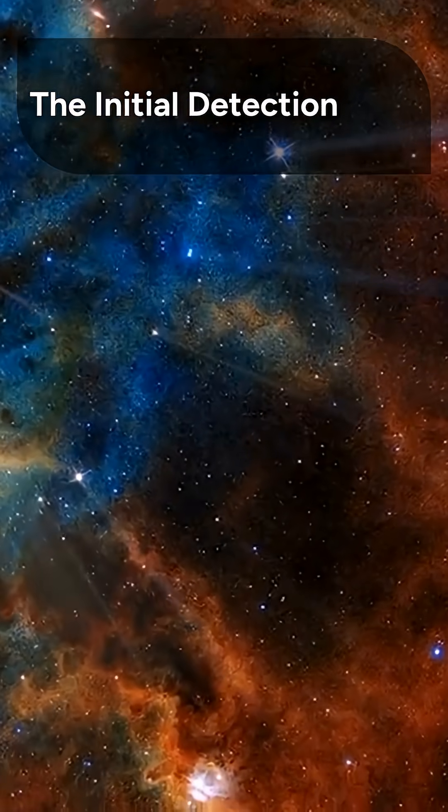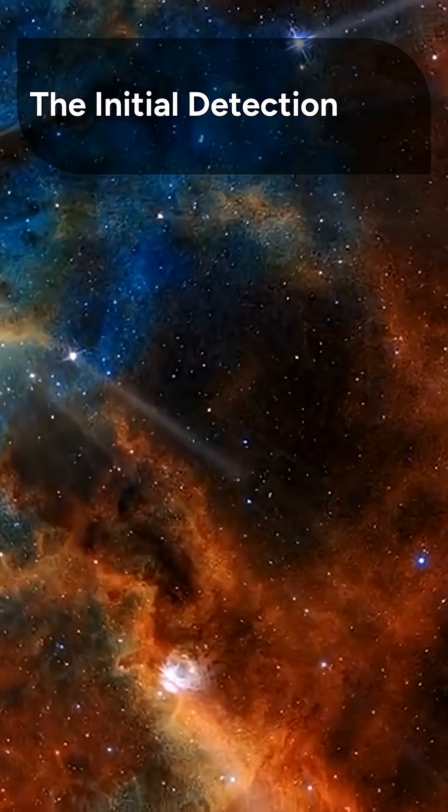How did they first spot this ancient event? It began with a bright flash of high-energy radiation. The event was initially flagged as a long-duration gamma-ray burst, or GRB, by the space-based SVOM on March 14, 2025.